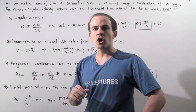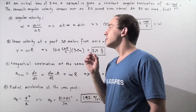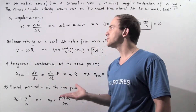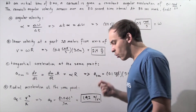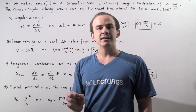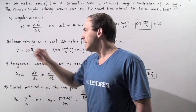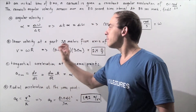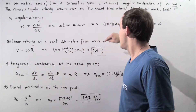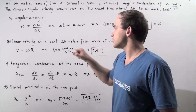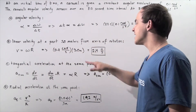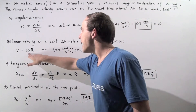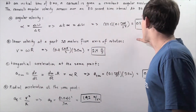Now let's move on to part b. We want to find the linear velocity of the object at 3 meters from the axis of rotation, from the center of the carousel. Recall that linear velocity equals angular velocity times radius. So velocity equals 0.8 times 3 meters, giving us 2.4 meters per second. The angular velocity omega is identical to the one obtained in part a.